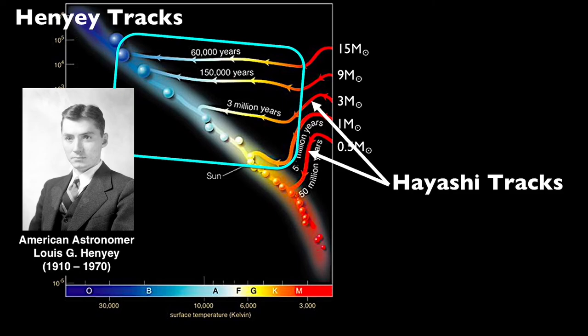How much time is spent on the Hayashi versus the Henyey pre-main sequence evolutionary track depends on the protostar's mass. This mass will ultimately determine not only what spectral-type main sequence star it will be, but also how it will eventually evolve and die out. Which brings us to stellar evolution, coming up next.